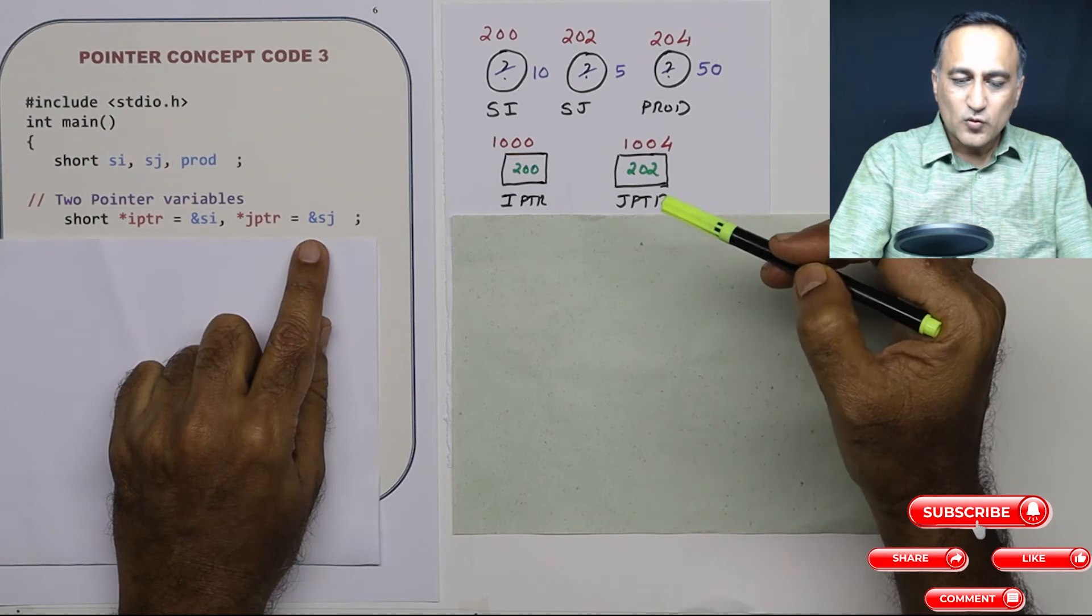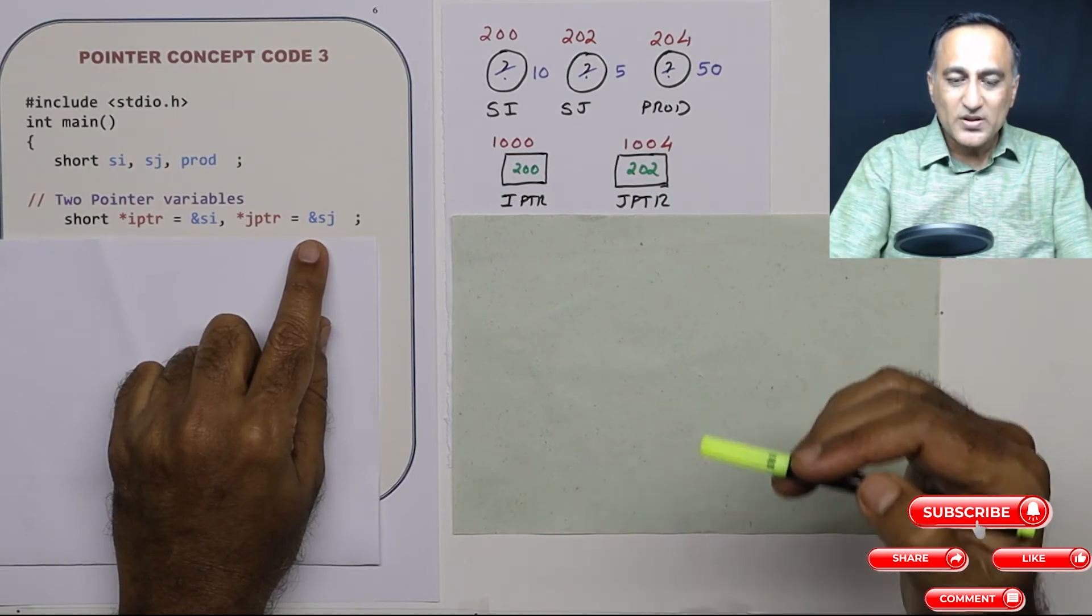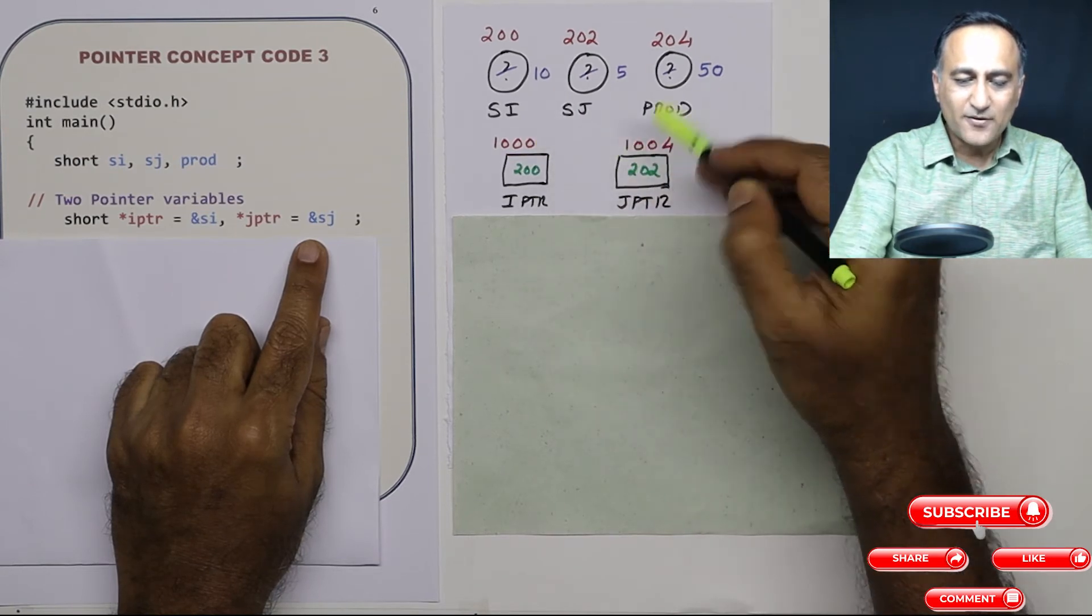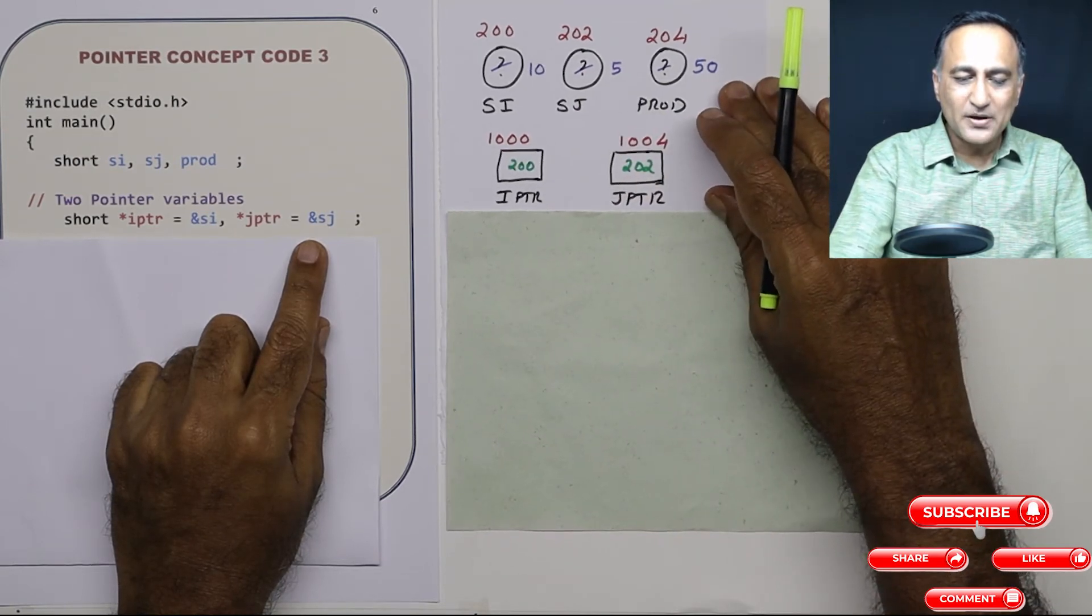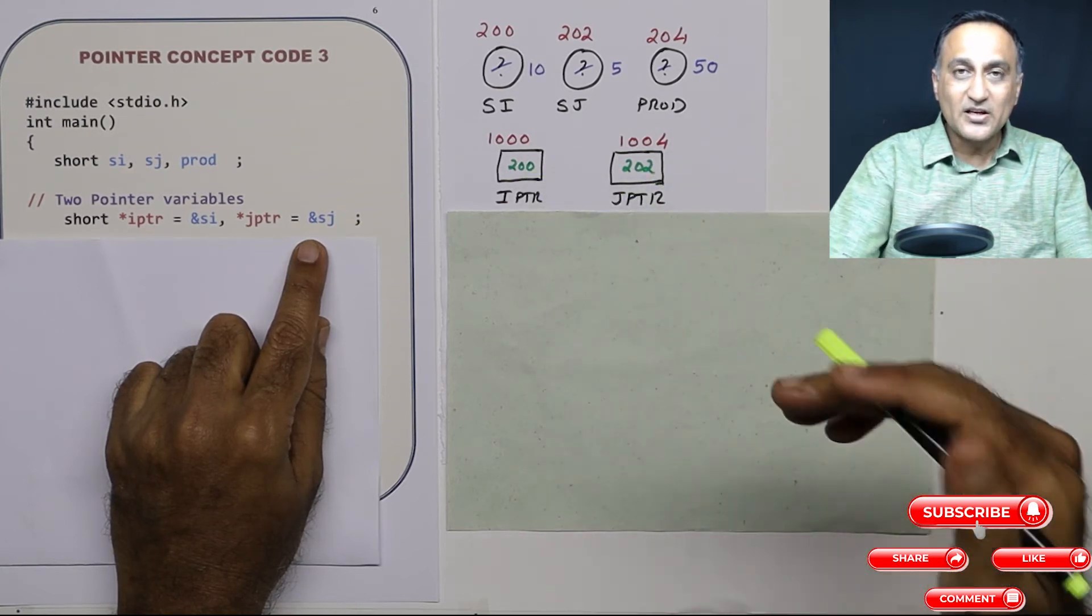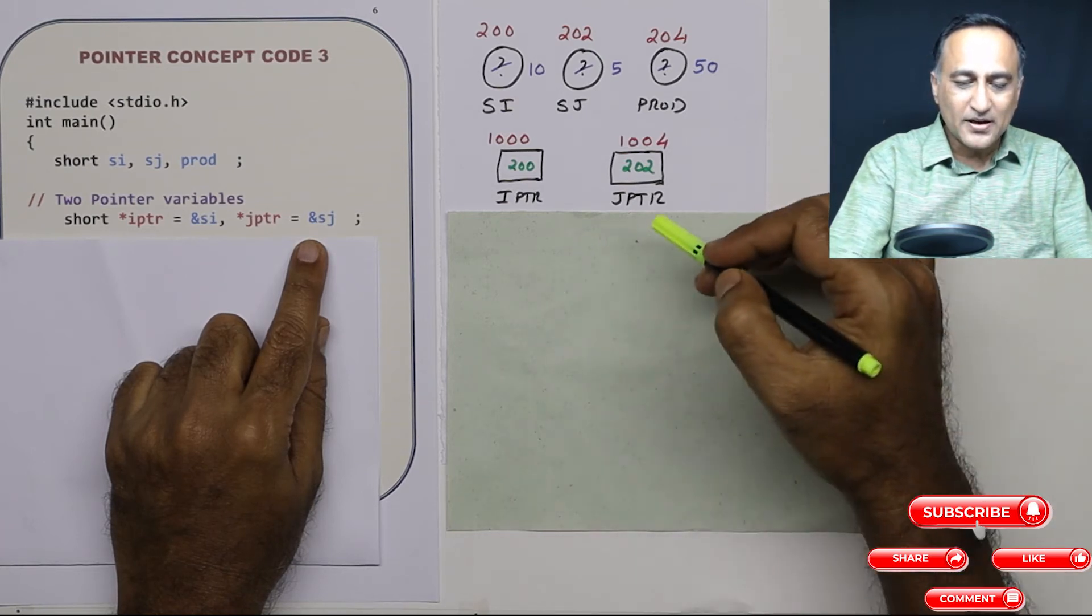Address of SJ - so what is contained in JPTR or what is the value within JPTR? It is 202. 1000 and 1004 are the addresses of IPTR and JPTR. 200 and 202 are the addresses or values contained in IPTR and JPTR.